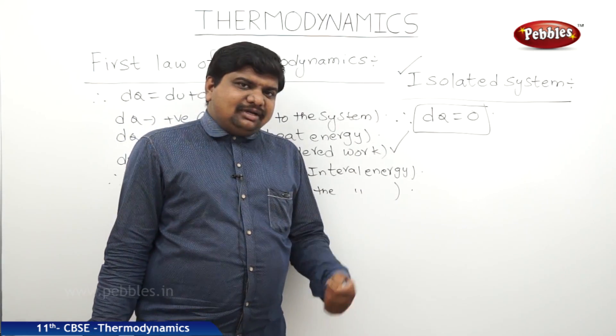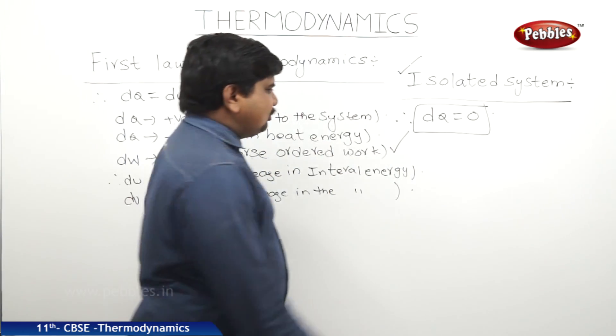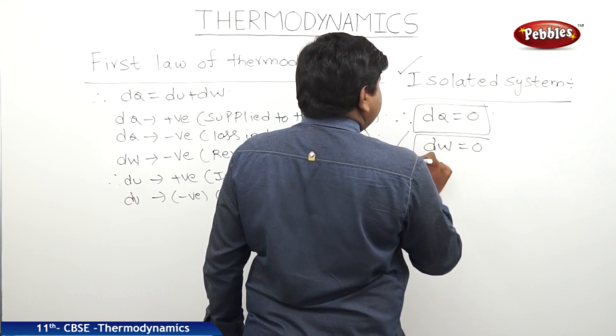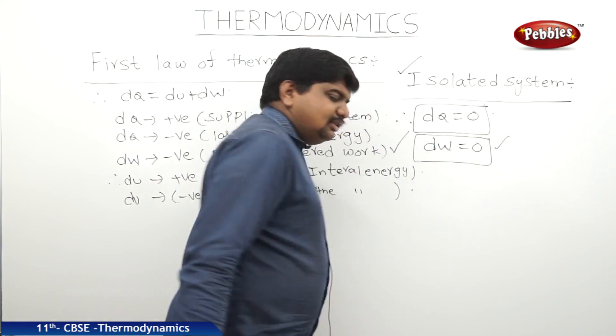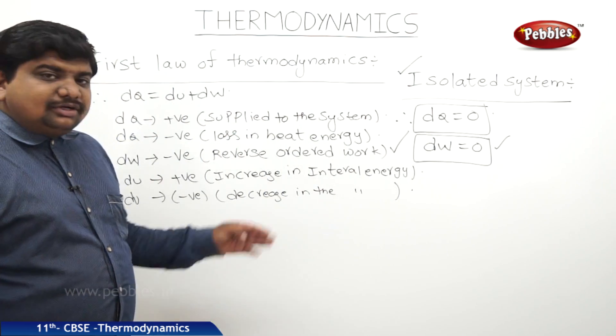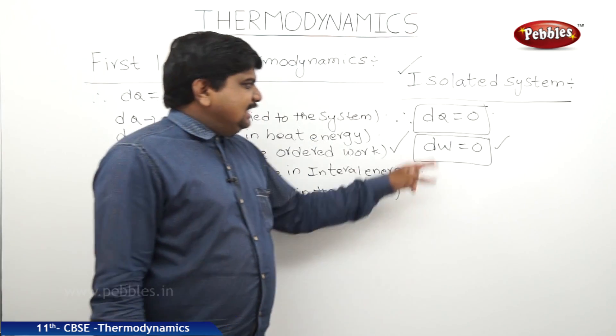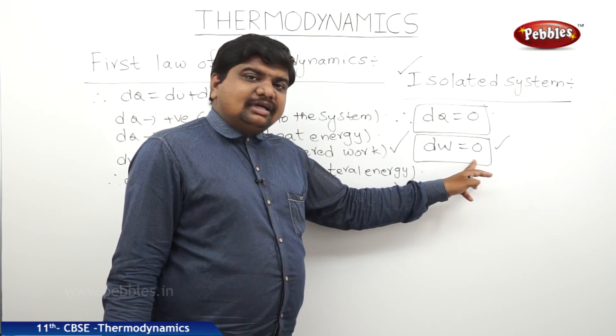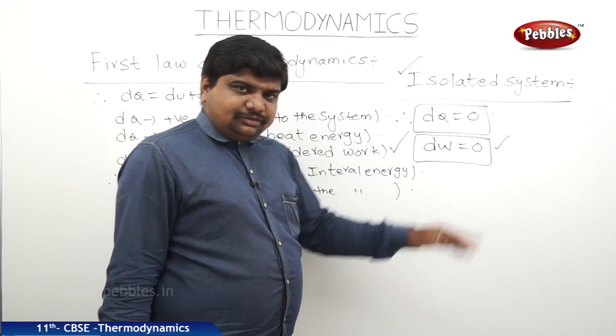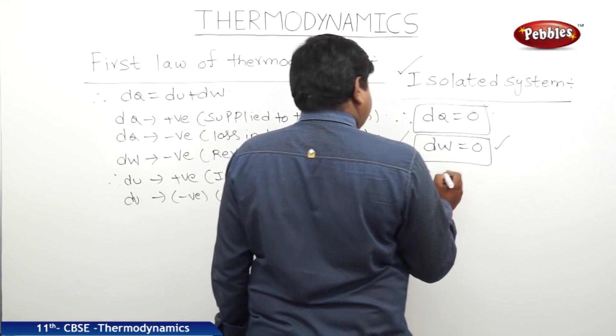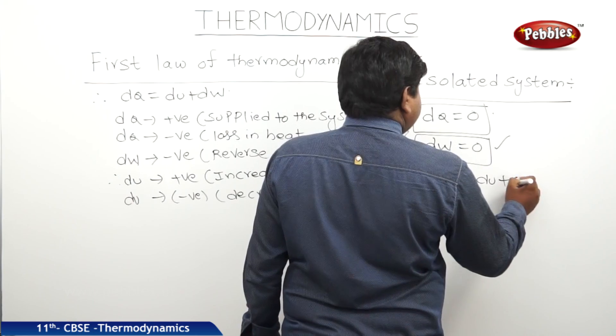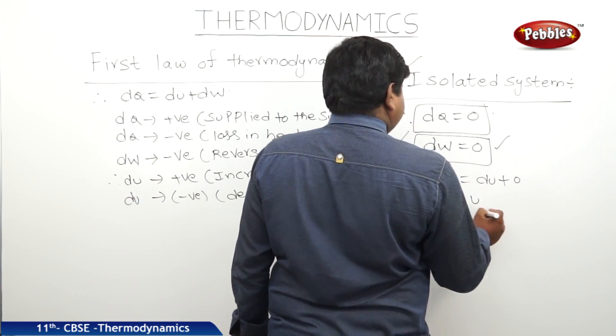That's why DQ will become zero. Once the heat energy supplied to the system is zero, automatically the work done will be zero. Because we can say from the Joule's law of heating, the work done is directly proportional to the heat energy supplied. If the heat energy supplied or change in the heat energy is zero, automatically the work done or the change in the work done will be zero. Therefore, we can say zero is equal to DU plus zero. So answer will become DU.